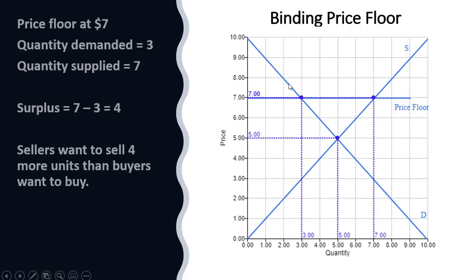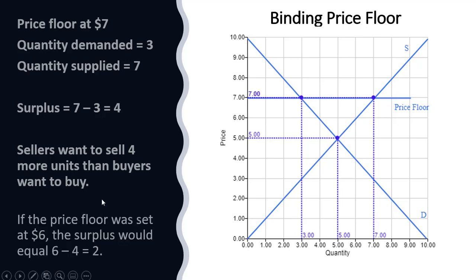Again, this is binding. The price cannot fall to the equilibrium price of five dollars where there is no surplus. If the price floor was set at six dollars, the surplus would equal two — at a price floor of six dollars, quantity demanded is four, just reading off the demand curve, and the quantity supplied at six dollars is six. So the difference between six and four represents the surplus if the price floor was at six dollars.